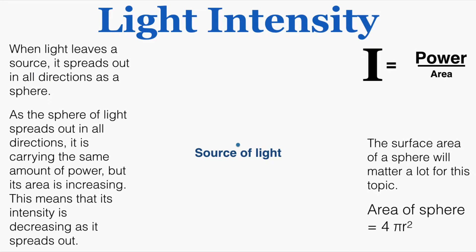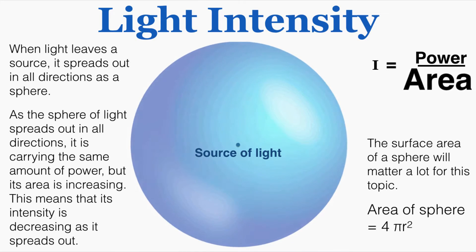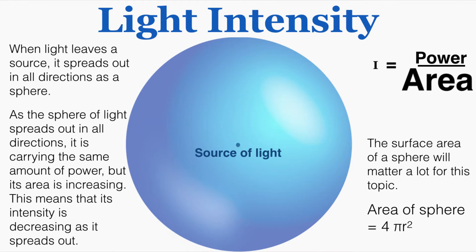Our understanding of light intensity is based on geometry, because when light leaves a source it spreads out in all directions as a sphere. We can look at this source of light here — this little blue dot — and imagine rays of light leaving it in every direction. Because light moves at the same speed in all directions, it moves out from the source as a sphere. As the sphere spreads out, it carries the same amount of power, but its area is increasing.